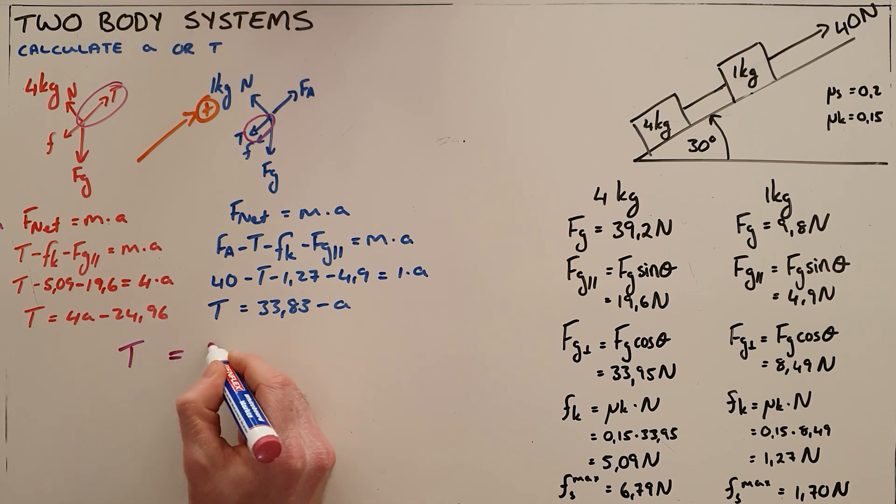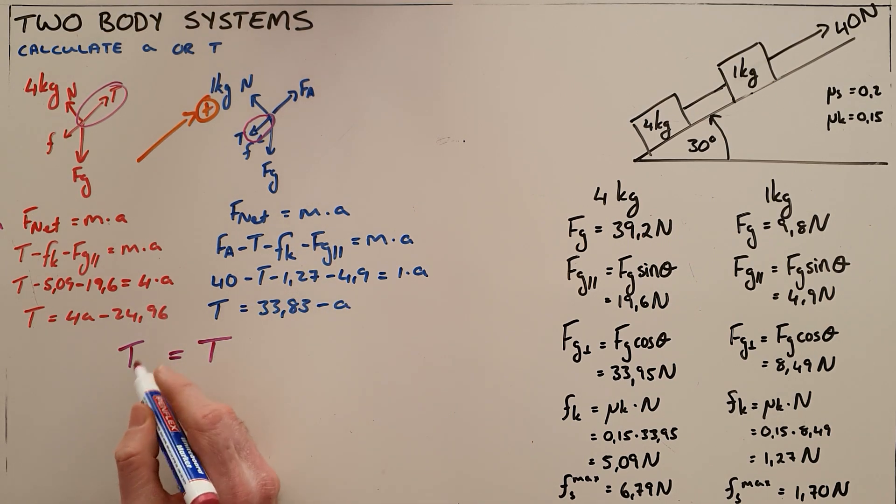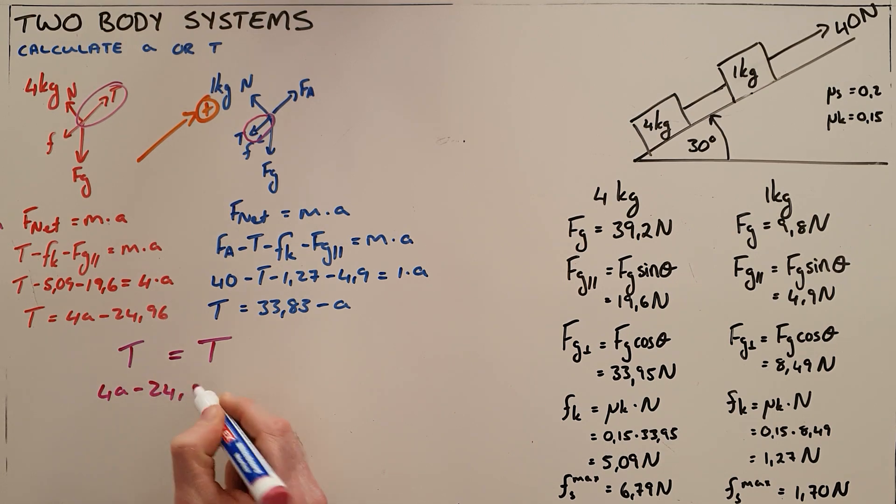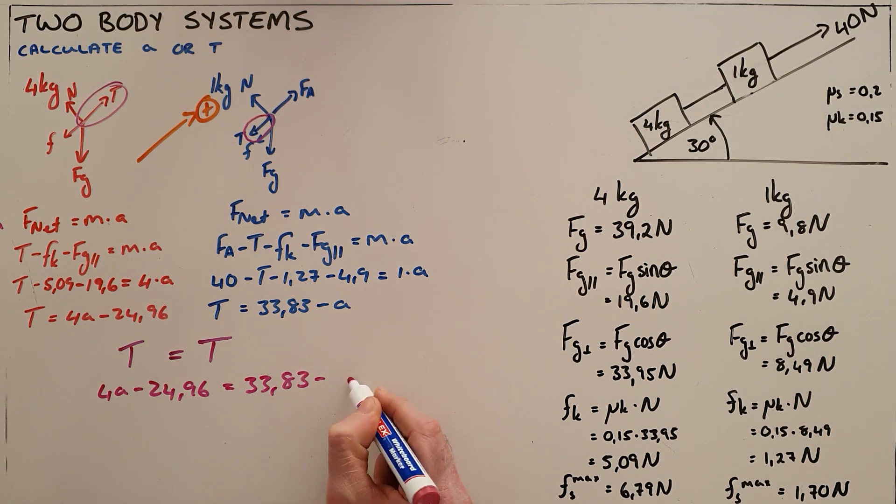Which means that the tension force acting on the 4 kilogram object must be equal to the tension force acting on the 1 kilogram object, which means that these two expressions can be set equal to each other, which then allows us to calculate for our unknown acceleration.